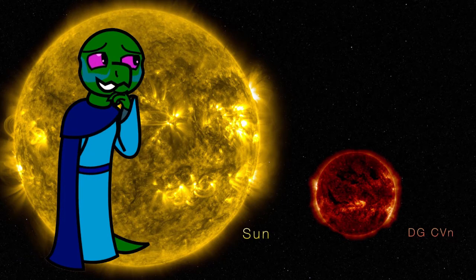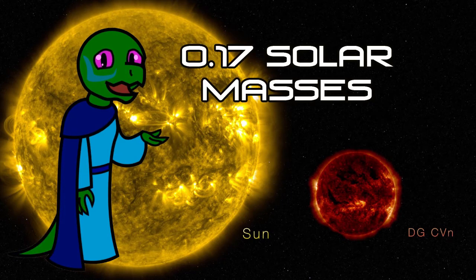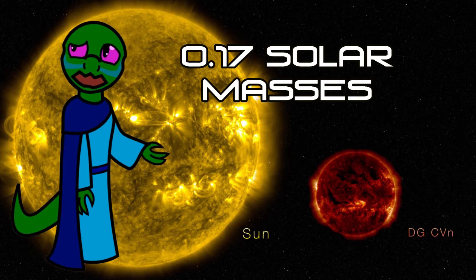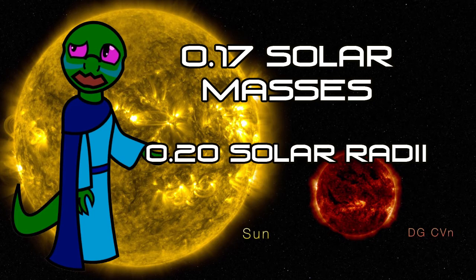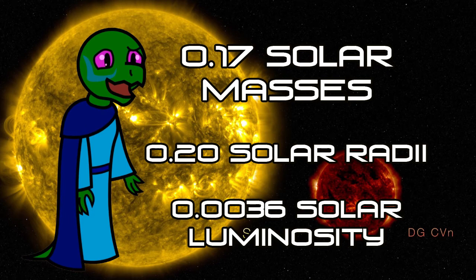Ross 128, in particular, has only about 0.17 solar masses and 0.20 solar radii, 0.0036 solar luminosity.